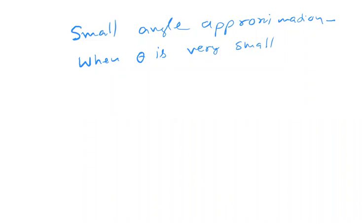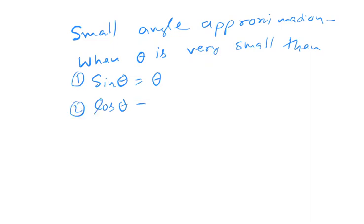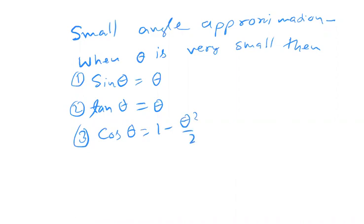When theta is very small, the first formula is tan theta approximately equals theta. The second formula is sin theta approximately equals theta. The third formula is cos theta, which is also used but theta is more commonly substituted directly.